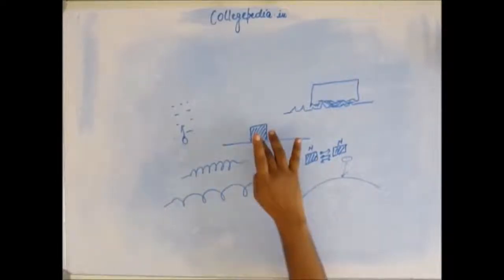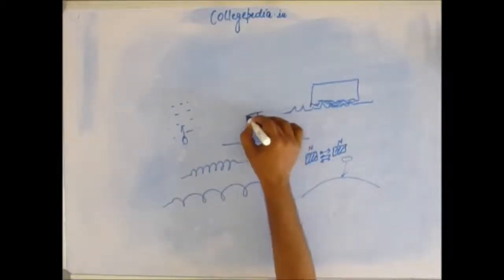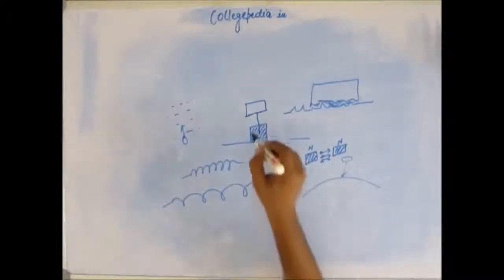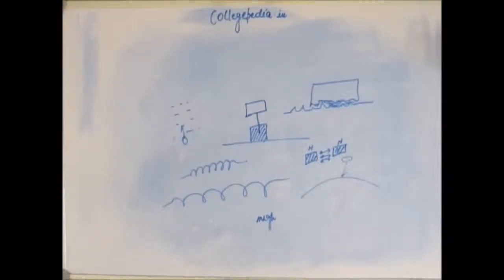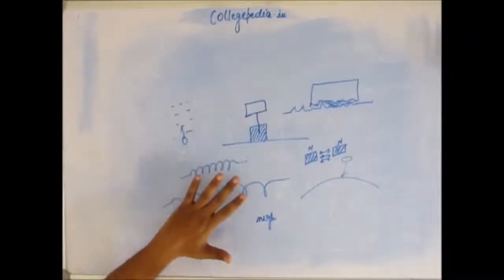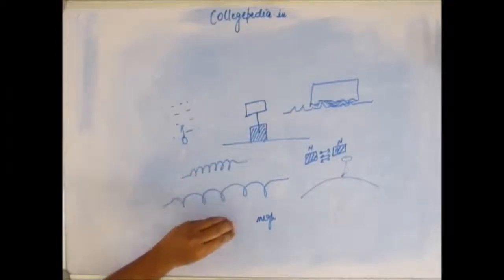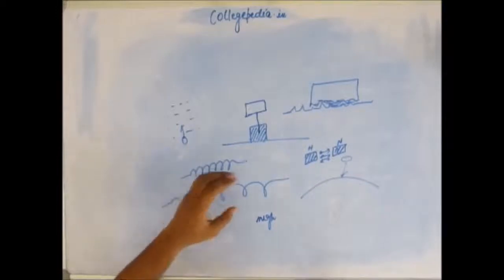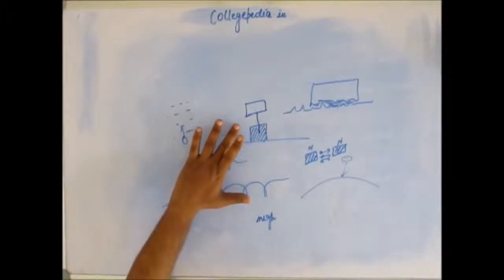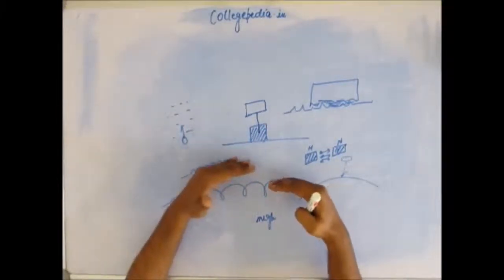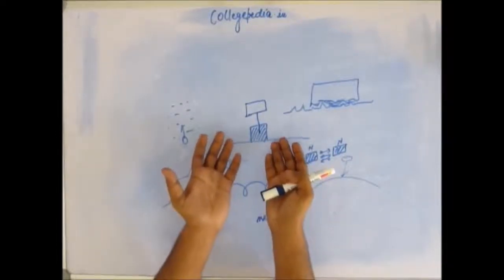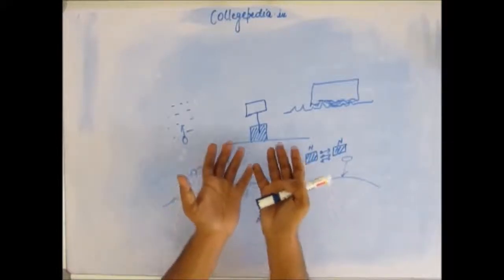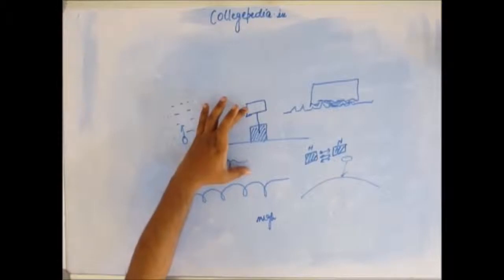Now let's look at another example. We have a block on the ground and we lift it up to a certain height. The block gains potential energy, which depends on the height — potential energy is mgh. When we pull the block up, we do some work because Earth is pulling the block downwards and we have to overcome that force. We apply just the same amount of force as Earth applies, but in the opposite direction, so no kinetic energy is gained, and we slowly pull the block up.